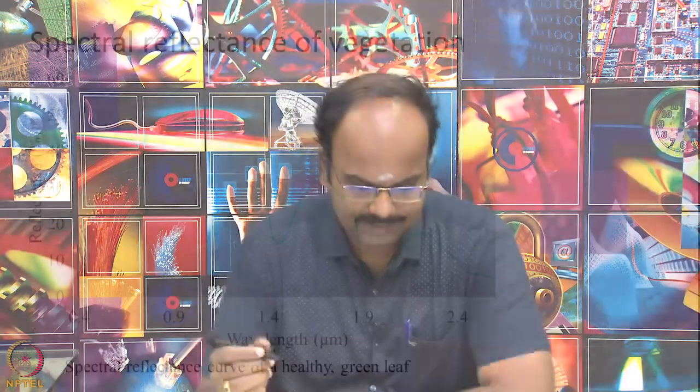Even though vegetation has many complex forms — from tiny algae to huge trees in a variety of shapes — the spectral reflectance curve of vegetation has one particular unique pattern. This is for healthy green vegetation. In particular, we are going to discuss the spectral reflectance curve of a healthy green leaf. We will start by understanding the spectral reflectance of one leaf and then slowly build our understanding of how it looks as we move from a single leaf to one plant, one full canopy, and so on.